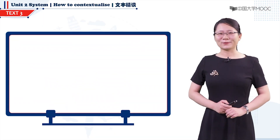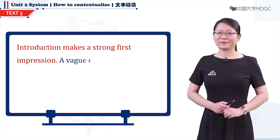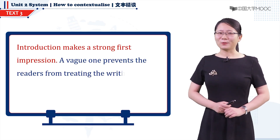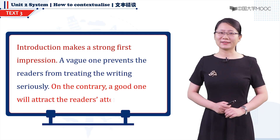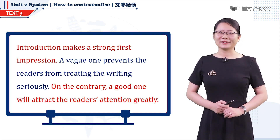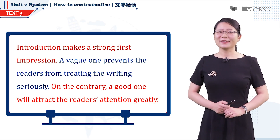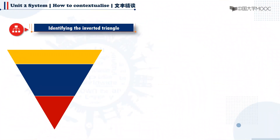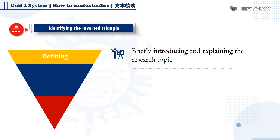As we have been emphasizing throughout this unit, introduction makes a strong first impression. A vague one prevents the readers from treating the writing seriously. On the contrary, a good one will attract the reader's attention greatly. A good introduction usually resembles the shape of an inverted triangle. It starts from the stage of defining, where you briefly introduce and explain the research topic. It serves as a general announcement of what you are writing about.